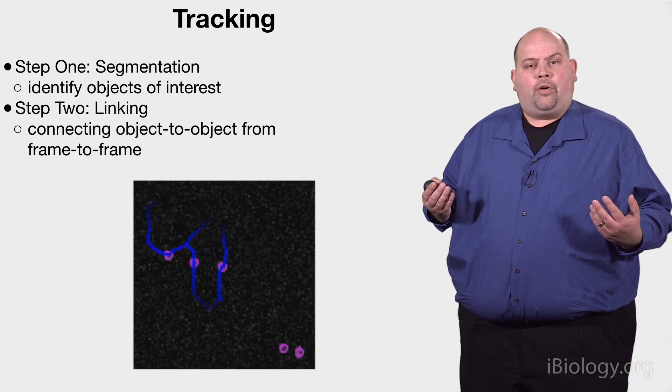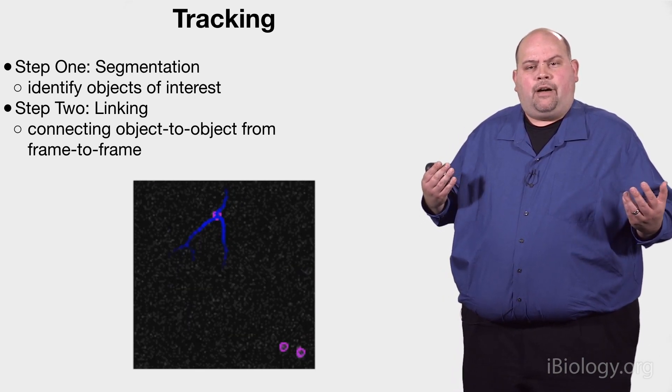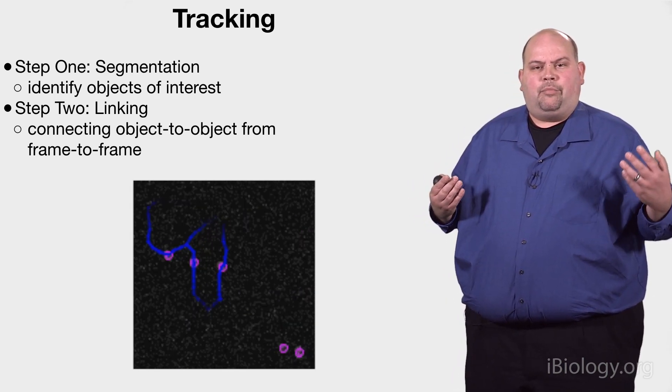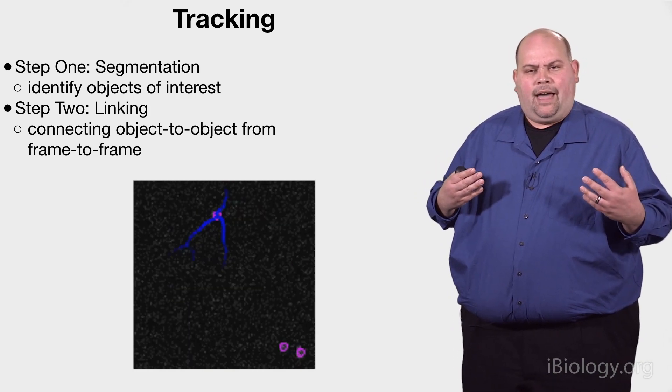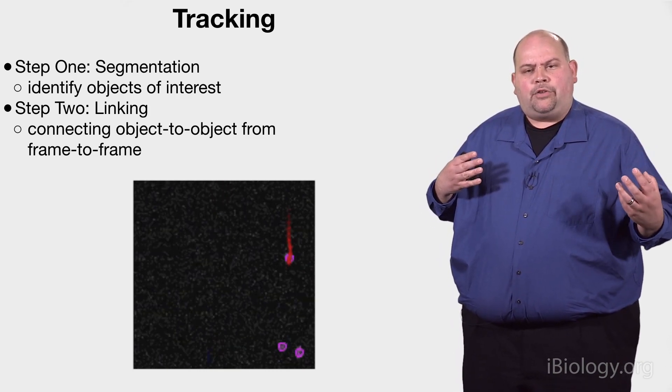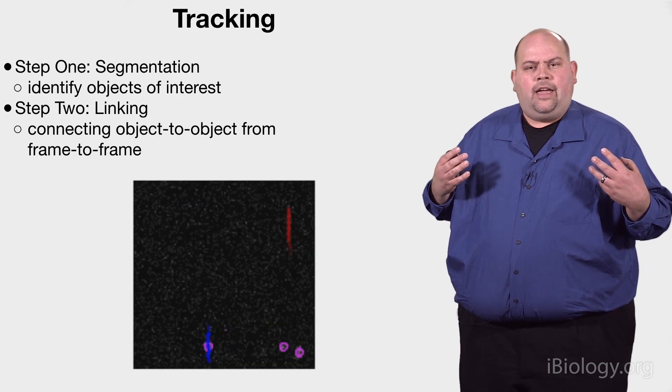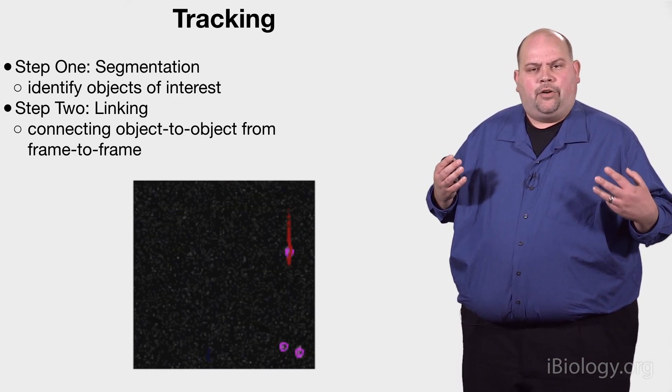It can also be much more advanced and complex, where you actually take into account the cell features. For example, a big cell and a small cell crossing paths, trying to actually take into account the morphology and the trajectory of each cell, and trying to actually see where they go and track them as they interact.